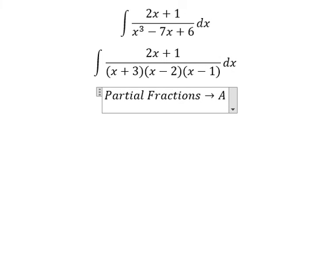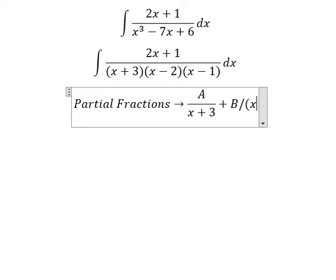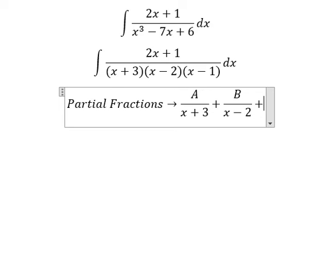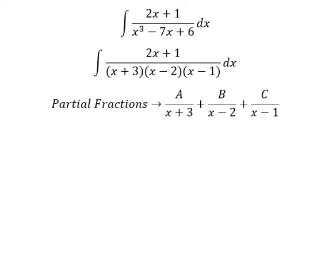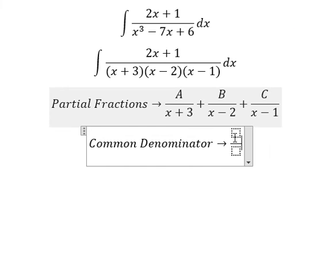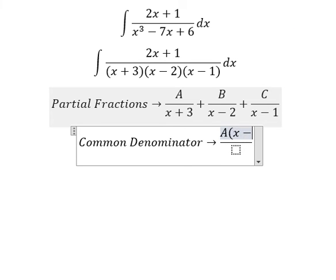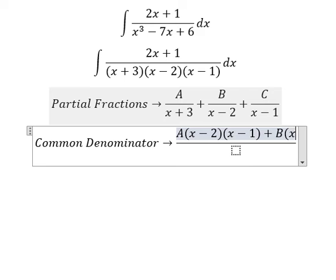Next we do partial fractions, so I will put capital A over (s + 3), capital B over (s - 2), capital C over (s - 1). Next we find the common denominator, so we have A multiplied by (s - 2)(s - 1), B multiplied by (s + 3)(s - 1).